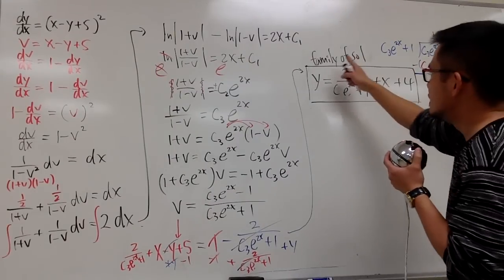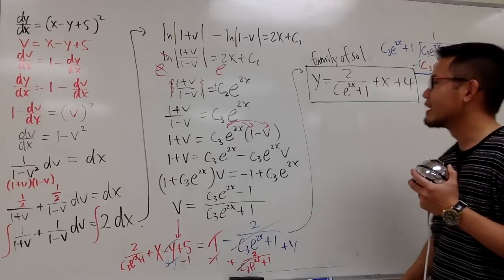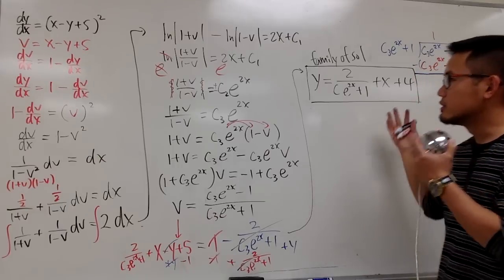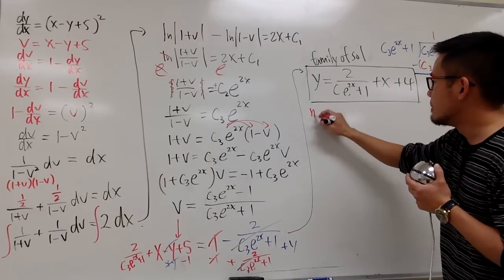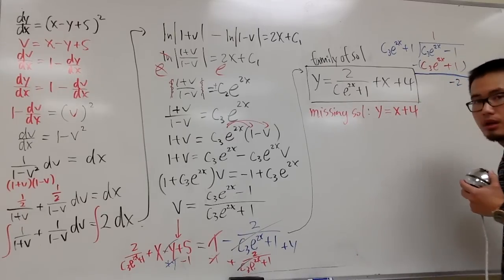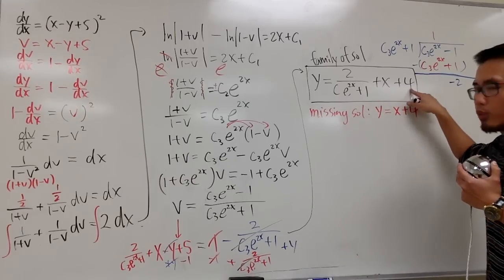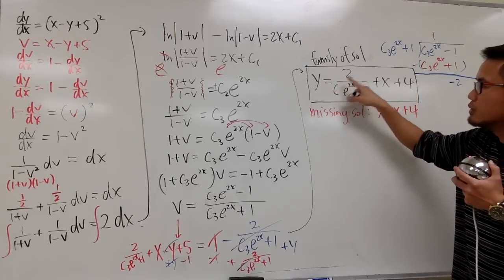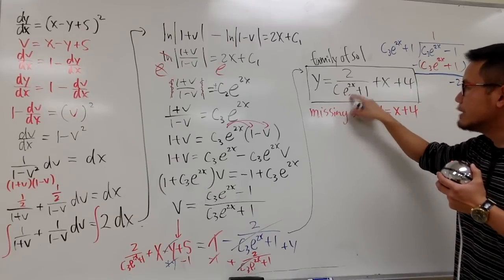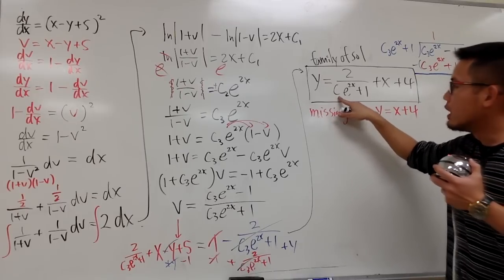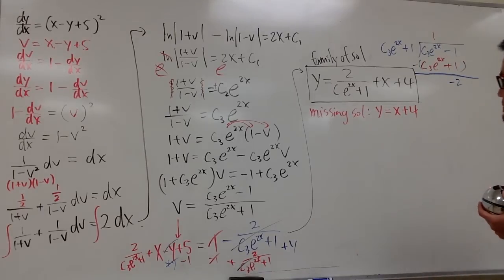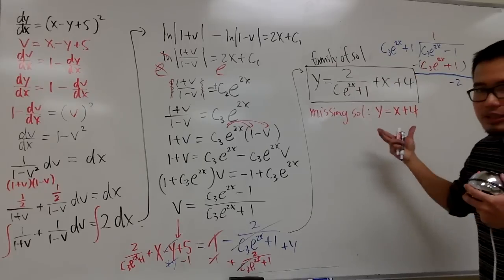However, there is one solution that does not belong to this family — a missing solution. It is y equals x plus 4. You might think x plus 4 is already in there, but no matter what value you choose for C, this expression cannot reduce to just x plus 4. If C equals 0, you get 2 over 1 plus x plus 4, which is x plus 6 — not x plus 4.